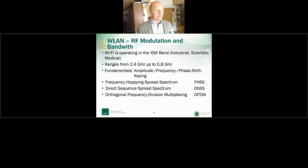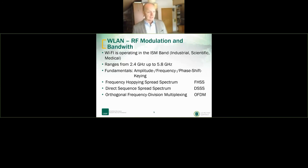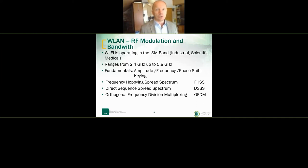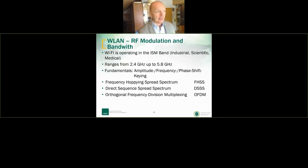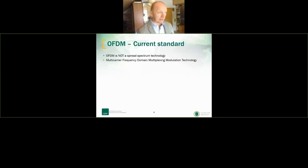Three important technologies are Frequency Hopping Spread Spectrum (FHSS), Direct Sequence Spread Spectrum (DSSS), which were introduced with the first 802.11 standards, and Orthogonal Frequency Division Multiplexing (OFDM), which is the latest. OFDM is used in 3G, 4G, and other cellular technologies — it's a well-known engineering methodology to send digital information over radio frequency.